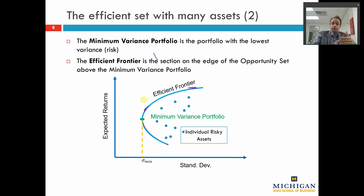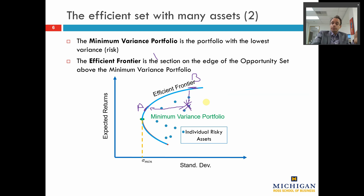They are contingent upon our risk preference. That's different from someone who is going to hold a portfolio that plots in the middle here — that person is acting in an irrational manner. That person is holding a portfolio which doesn't offer any increase in expected returns for the risk of that portfolio. That person's portfolio offers low returns but higher risk than portfolio A on the efficient frontier, and also offers lower returns for the same level of risk as portfolio B. So no rational investor is going to buy portfolio X, because that person could do better by holding lower risk in portfolio A or getting higher returns in portfolio B.